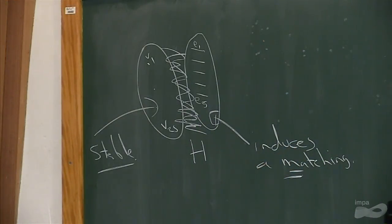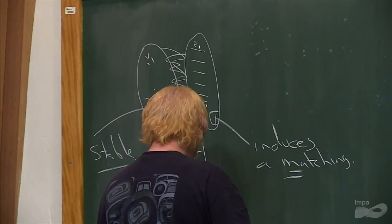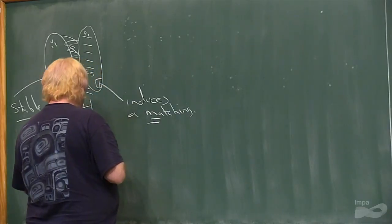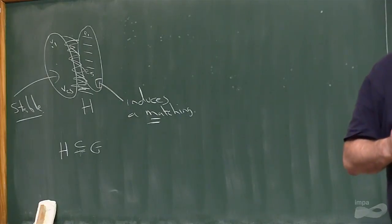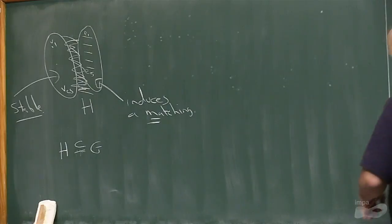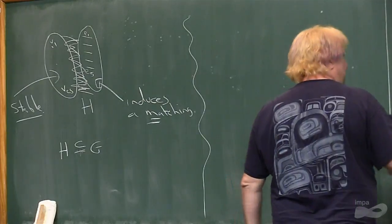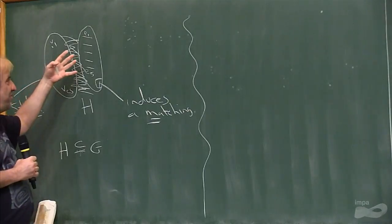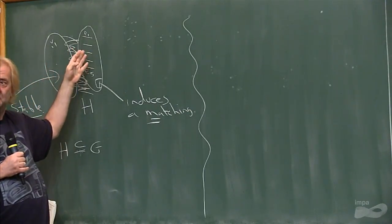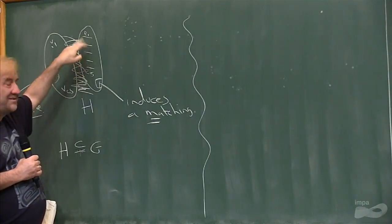But we don't forbid H as an induced subgraph, we forbid it as a subgraph. That's still a hereditary family. And so this thing can be partitioned into three stable sets. You take this one and then just two-color that.